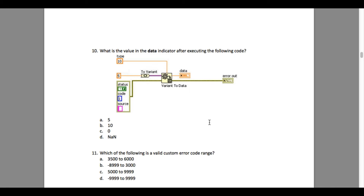The question asks: what is the value in the data indicator after executing the following code? If you look very carefully, the error cluster has a value of false, meaning there's no error. But since the error code is 1, that means it's a warning, so the code is going to execute even if there is a warning.